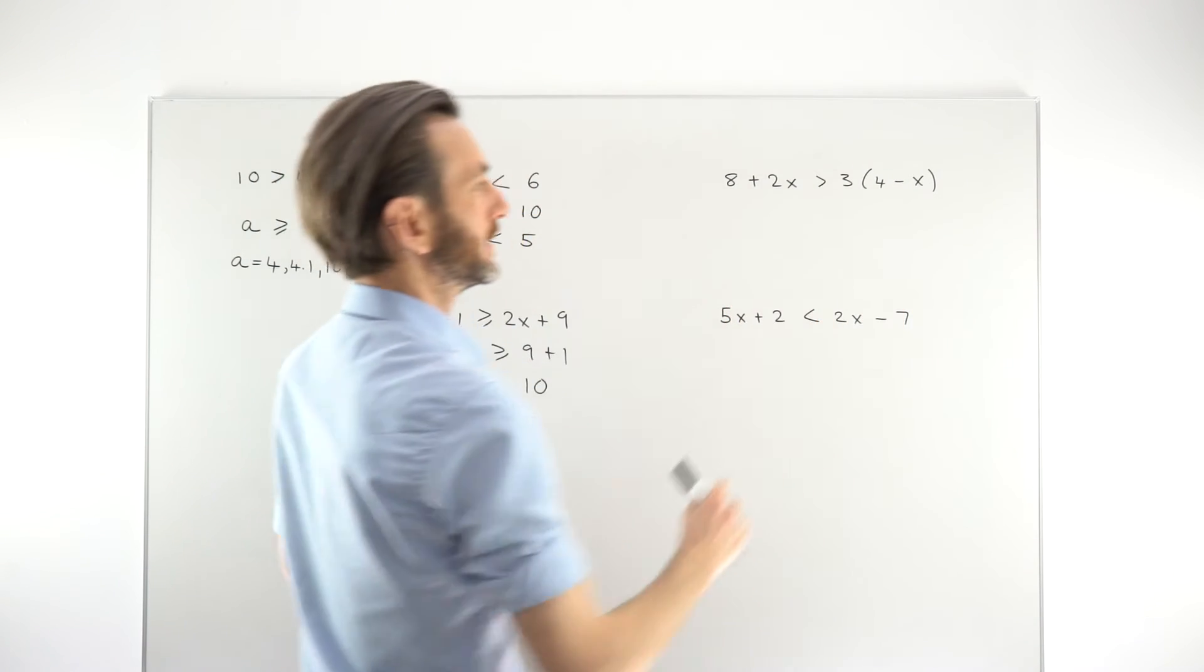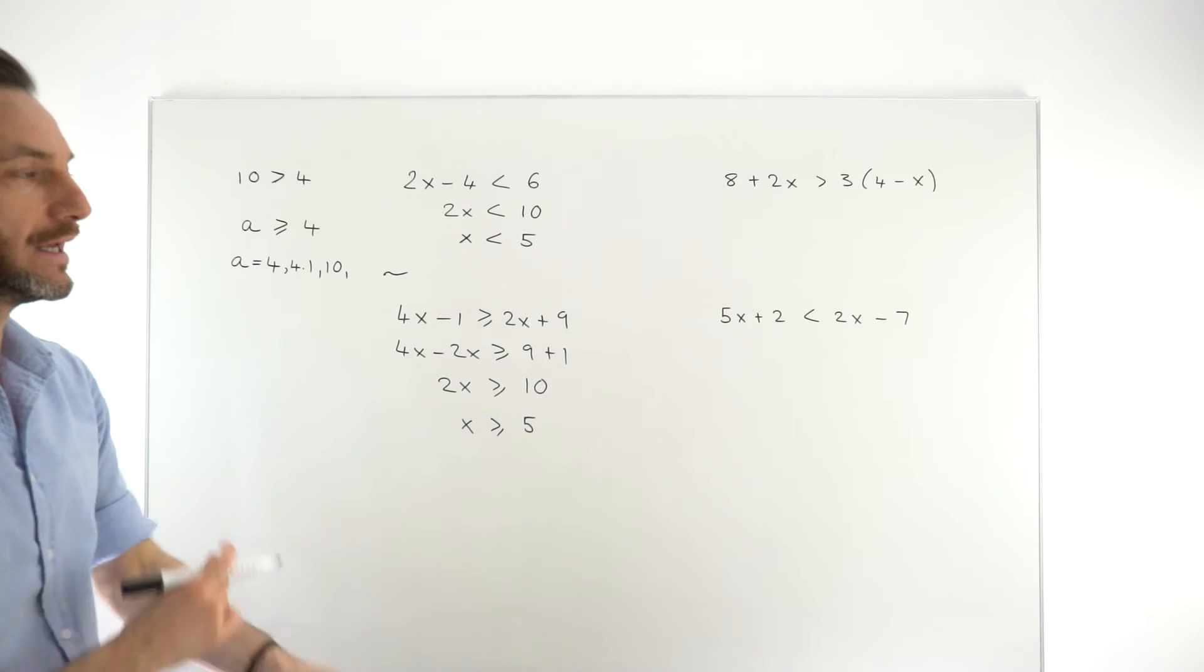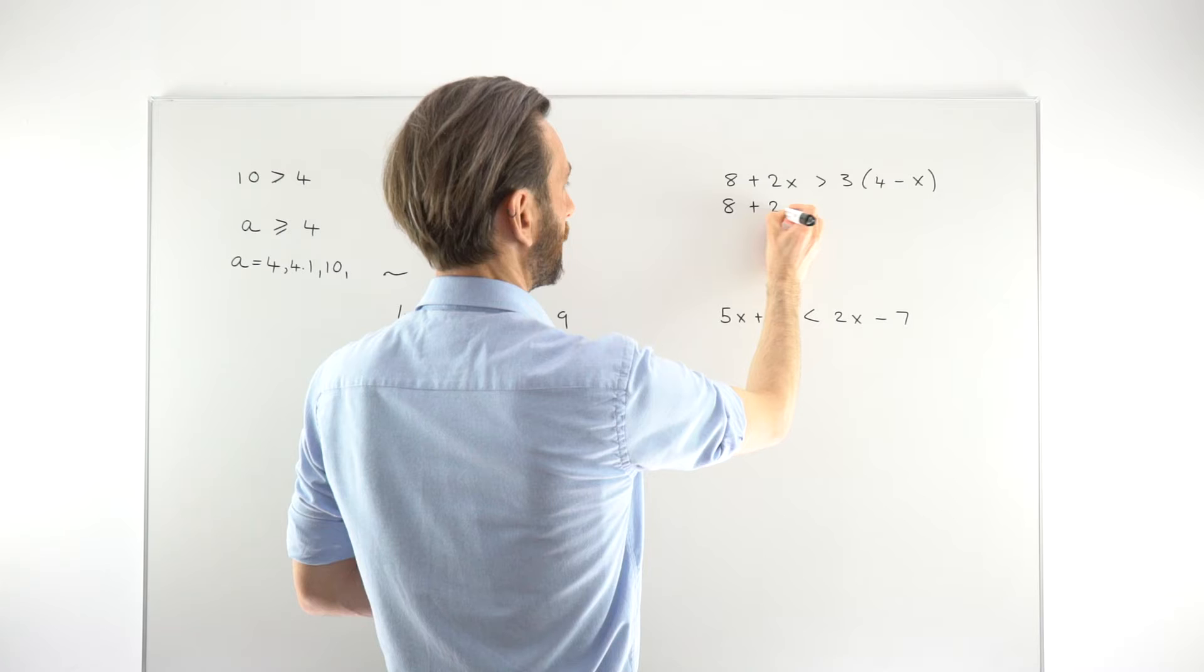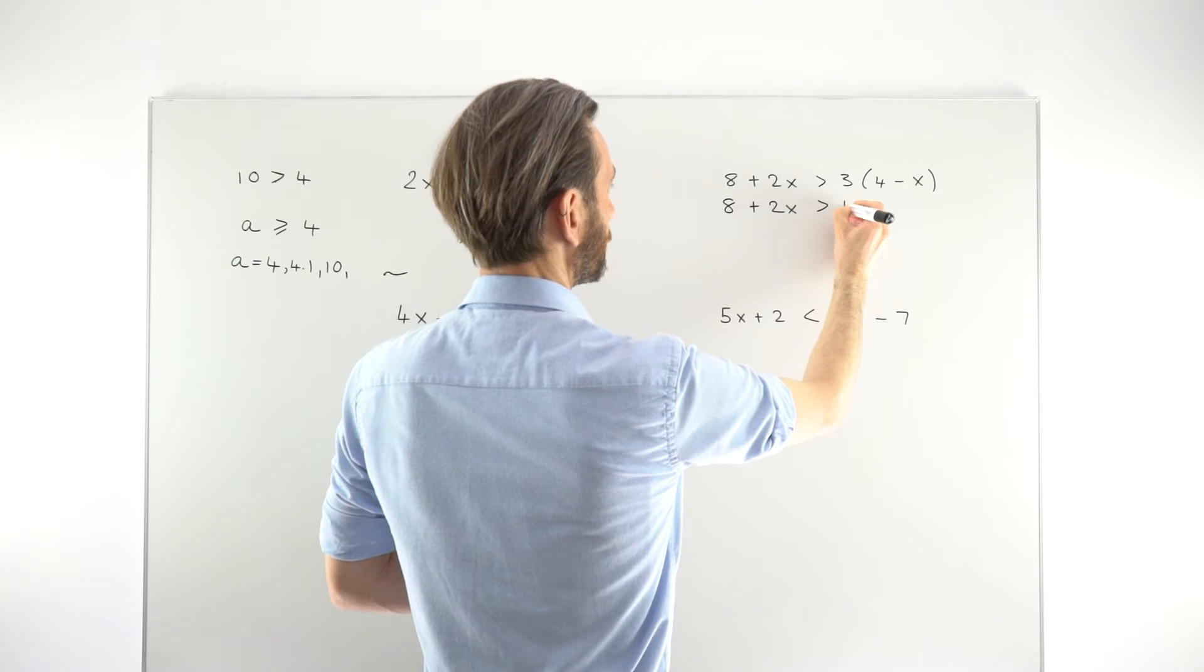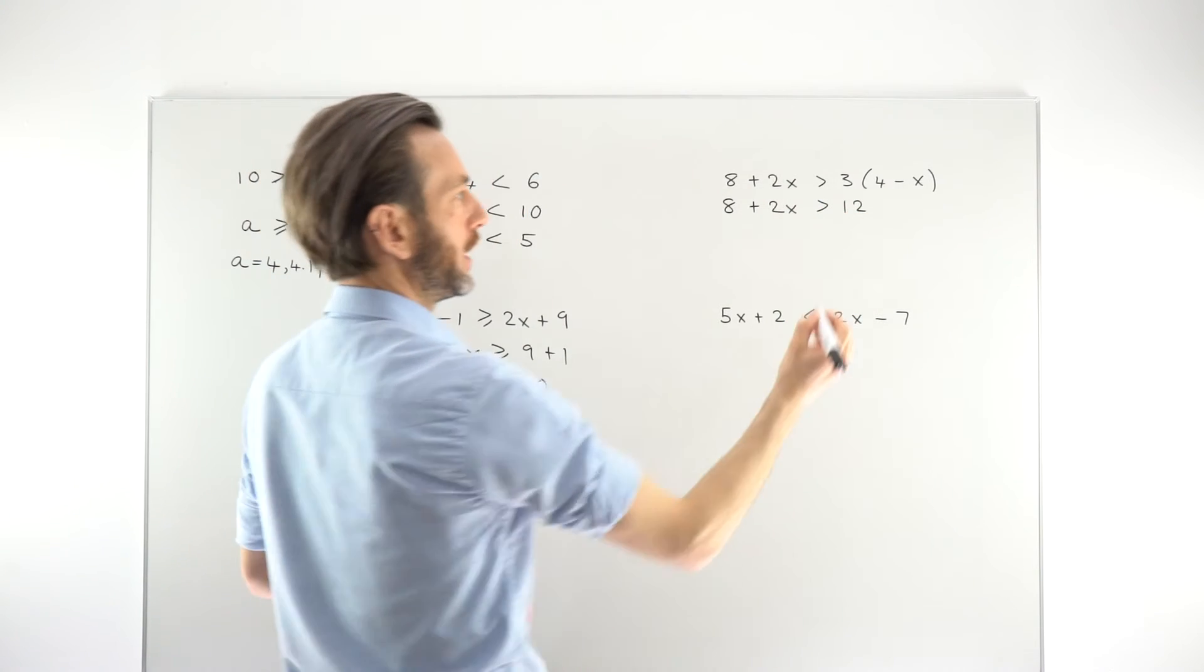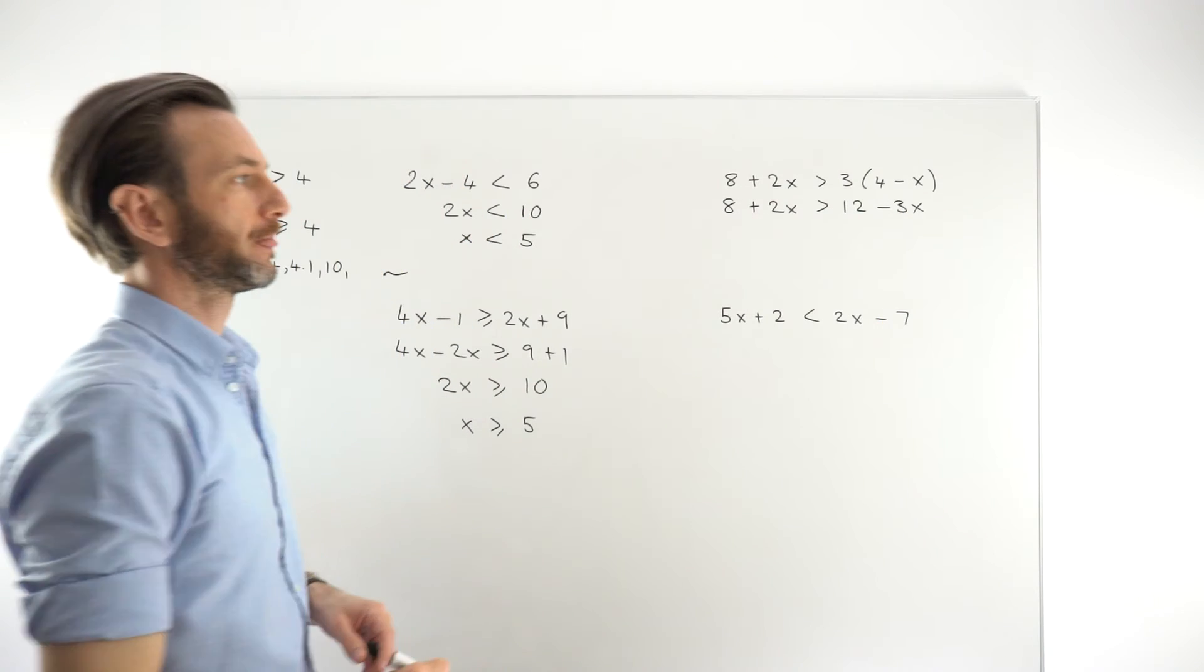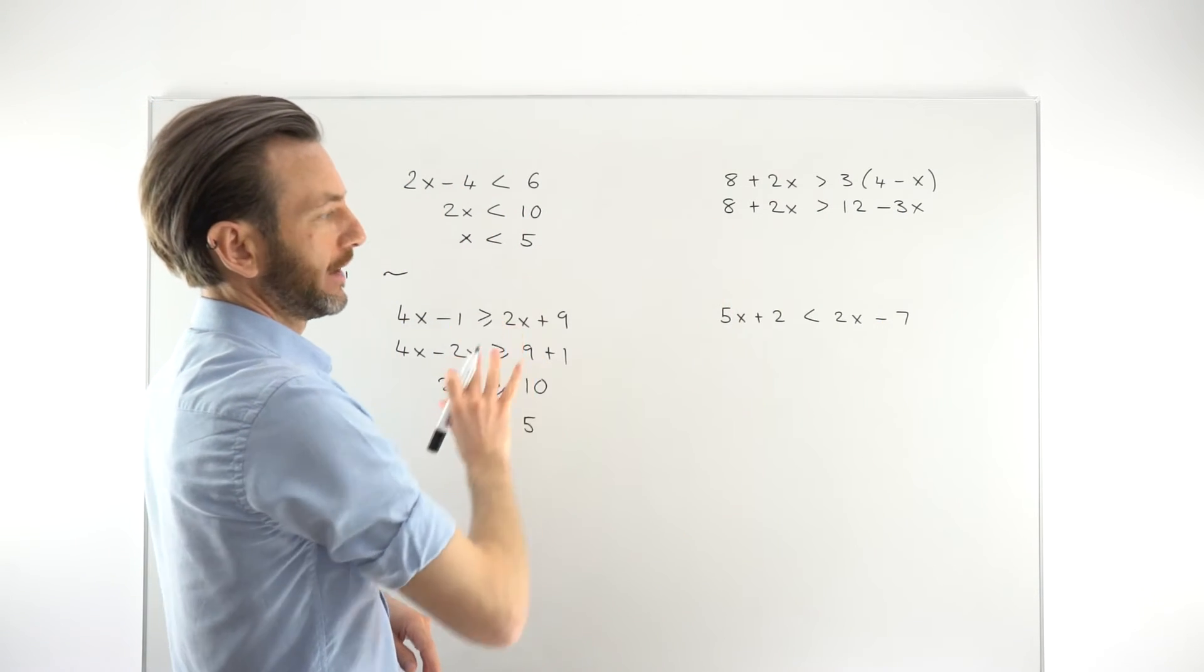So here we've got a bracket to deal with. Just like if you were doing an equation, you want to get rid of that bracket. Multiply the bracket out pretty much straight away just to make the terms easier. So 3 times 4 is 12, 3 times negative x is minus 3x.